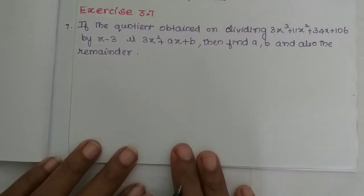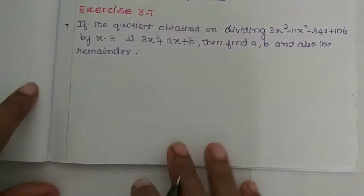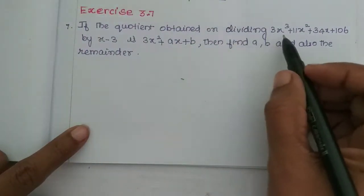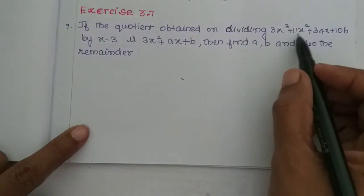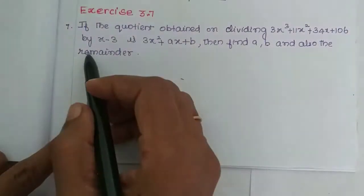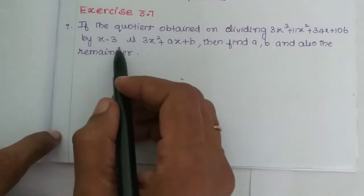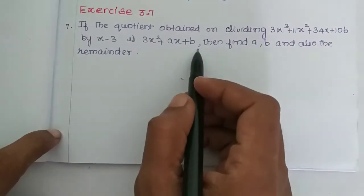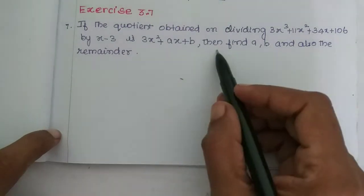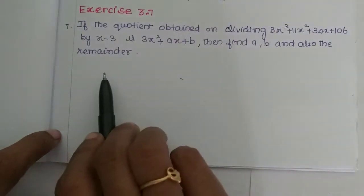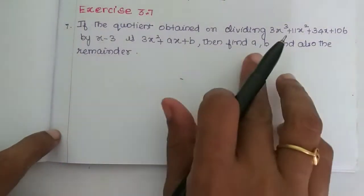In this video we have the 7th question: obtained on dividing 3x³ + 11x² + 34x + 106 by x minus 3, the quotient is 3x² + ax + b. Then find a, b, and also the remainder.